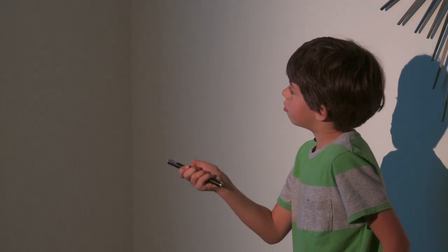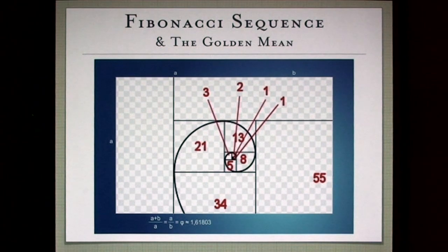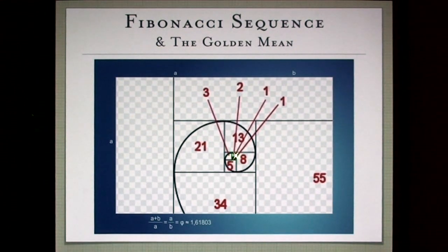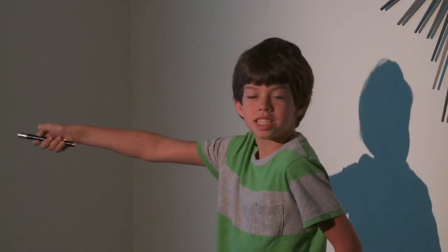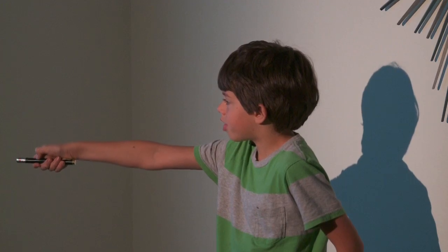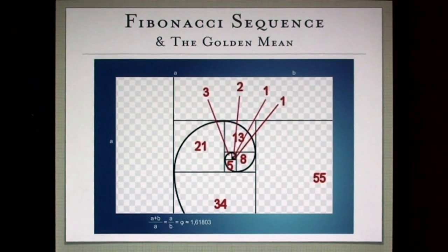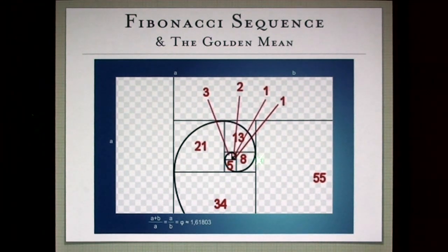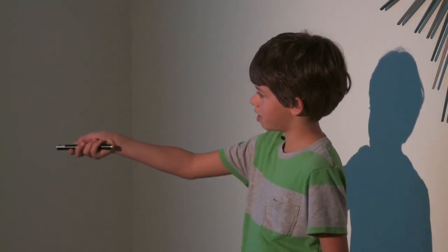Fibonacci also created something called the golden mean, which occurs a lot in nature. Up close, you can see that each and every square — one and one — takes up the same space as the two, and then the three takes up the same space as the two and the one. The fives take up the same space as the three and the two, the eight takes up space and so on, all the way around. When you zoom out, you get this spiral shape.